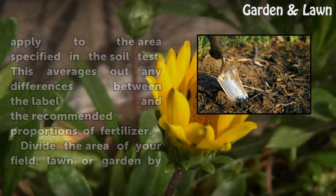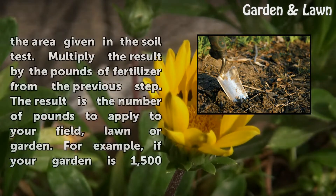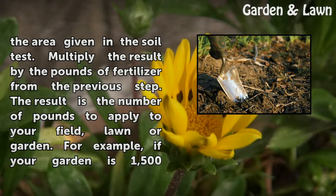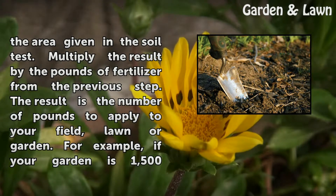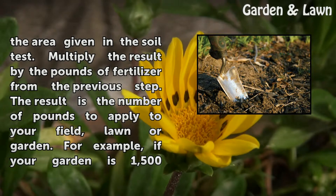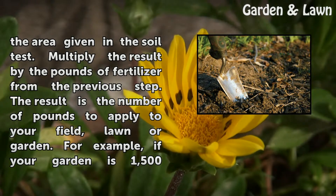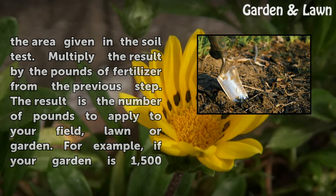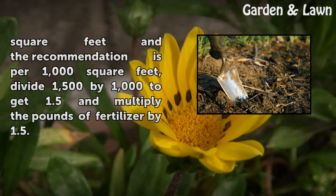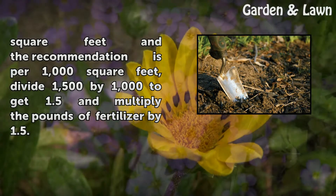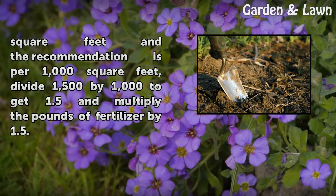Divide the area of your field, lawn, or garden by the area given in the soil test. Multiply the result by the pounds of fertilizer from the previous step. The result is the number of pounds to apply to your field, lawn, or garden. For example, if your garden is 1,500 square feet and the recommendation is for 1,000 square feet, divide 1,500 by 1,000 to get 1.5 and multiply the pounds of fertilizer by 1.5.